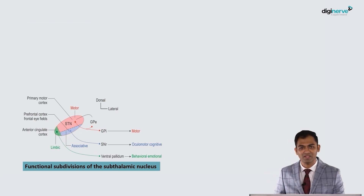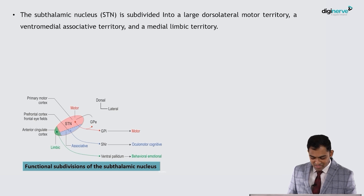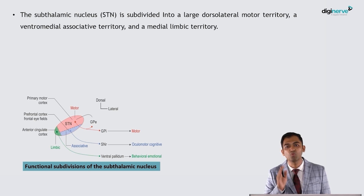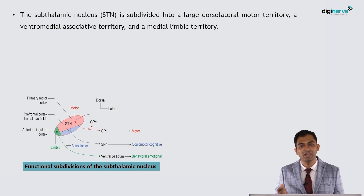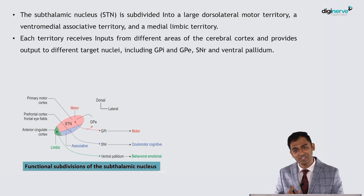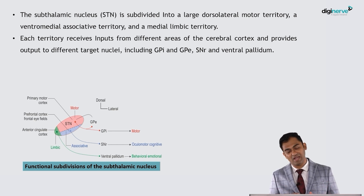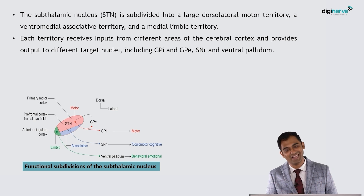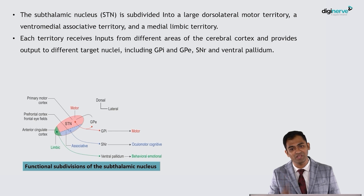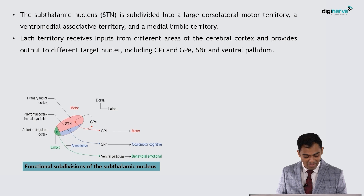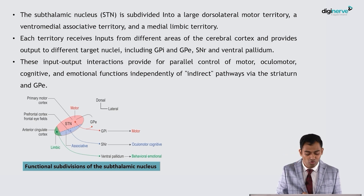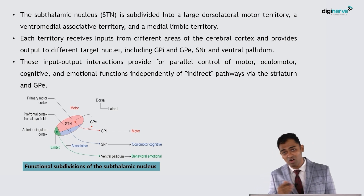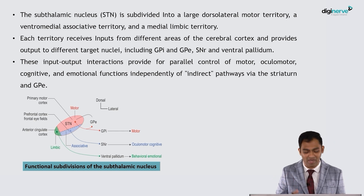As we can see in this diagram, there are three main parts of the subthalamic nucleus. The pink region is the dorsolateral part, concerned mainly with the motor territory. The blue region, ventromedial to that, is mainly the associative territory. The green region, medial to that, is the limbic territory. Each territory receives inputs from different areas of the cortex and provides outputs to different target nuclei — including GPi, GPe, substantia nigra pars reticulata, and the ventral pallidum. This input-output interaction provides for parallel control of motor, oculomotor, cognitive, and emotional functions — part of the striatopallidal pathway.